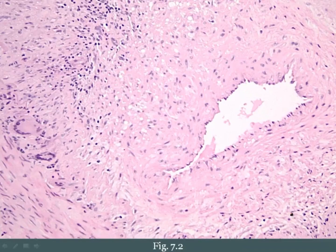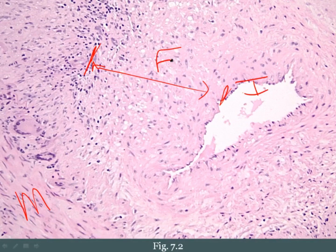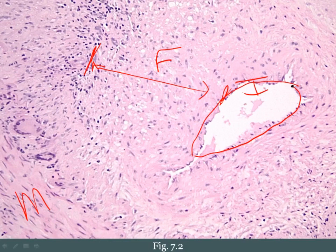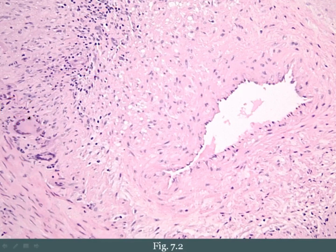On biopsy, this is the intima and the smooth muscle media. Between the media and the intima, there's a broad area of fibrosis — normally the intima should be right against the media, but here we have separation due to fibrosis from inflammation, narrowing the lumen and decreasing blood flow. There's also inflammation in the vessel wall and the presence of giant cells — a large cell with multiple nuclei — which is characteristic of this disorder.